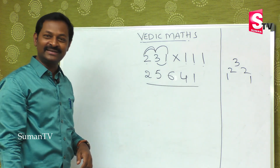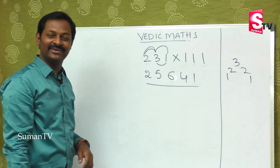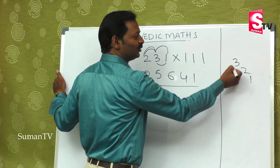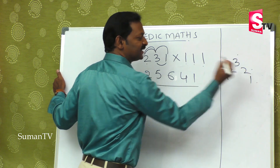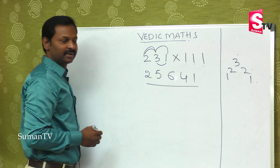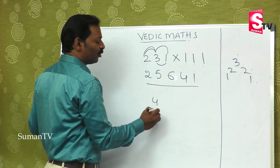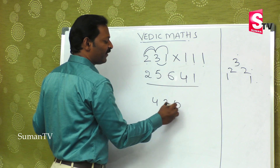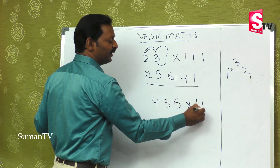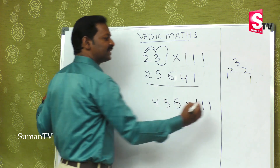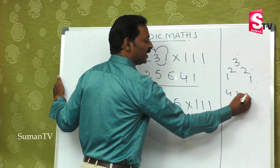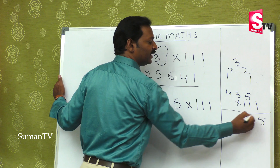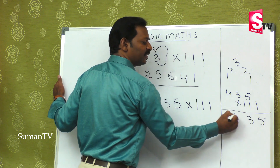Let's take 435 multiplied by 111. The straightforward approach: 1 times 5 is 5, 1 times 3 is 3, 1 times 4 is 4.